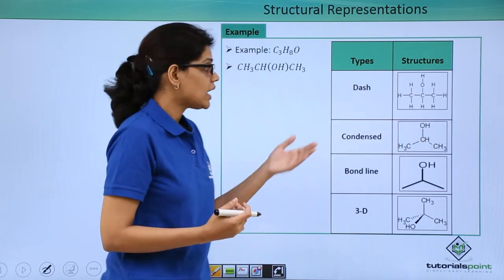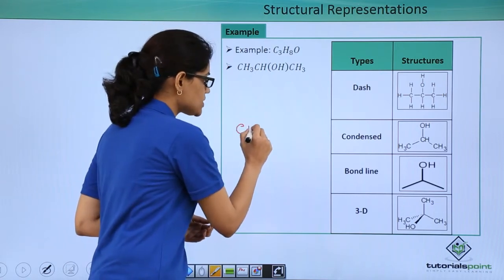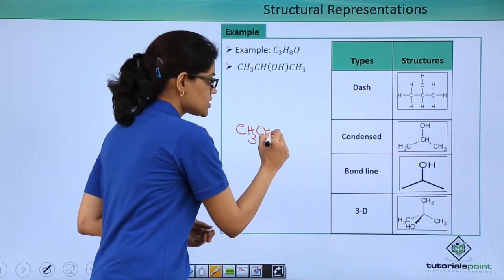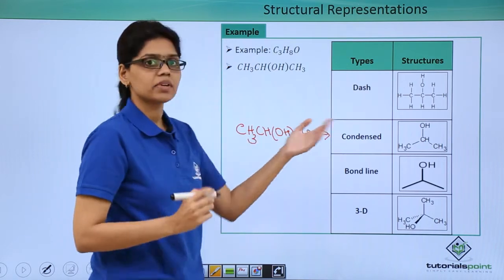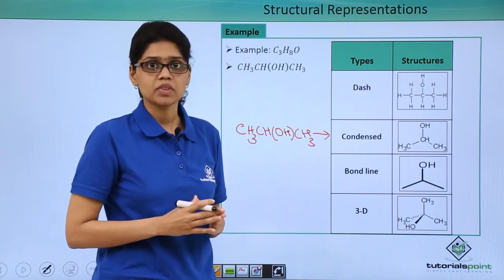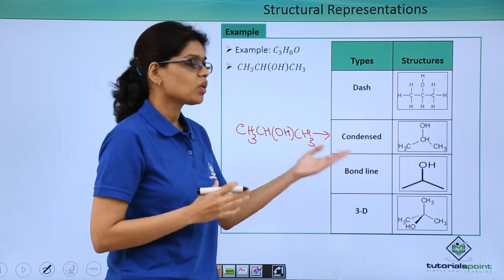This is condensed representation, and if we represent like this CH3, CH, OH, CH3, this is also nothing but a condensed representation. Now, the third one is bond line representation.